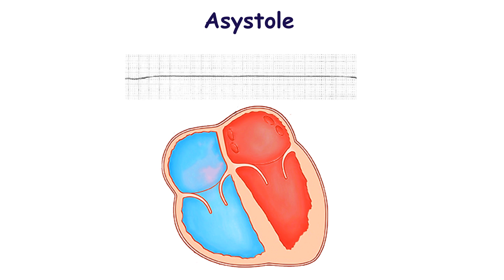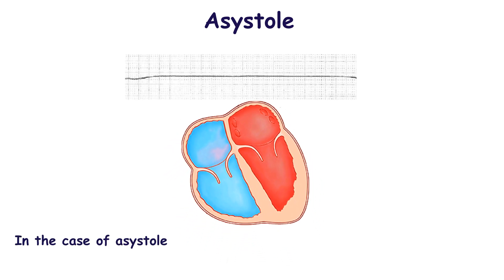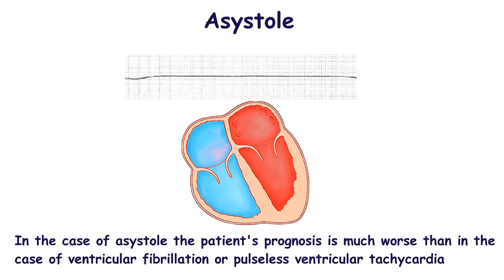The defibrillator cannot restore the normal heart rhythm in true asystole because there is no electrical activity. The defibrillator works only at the coordination of cardiac muscle cells depolarization. It is well known that in the case of asystole, the patient's prognosis is much worse than in the case of ventricular fibrillation or pulseless ventricular tachycardia.